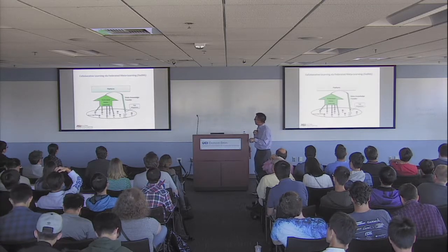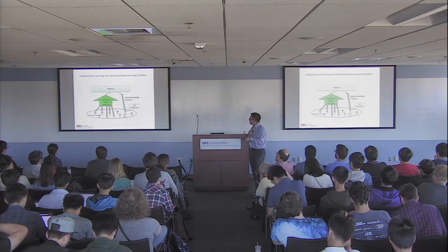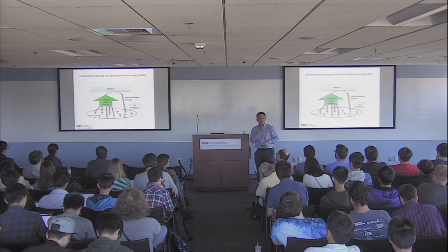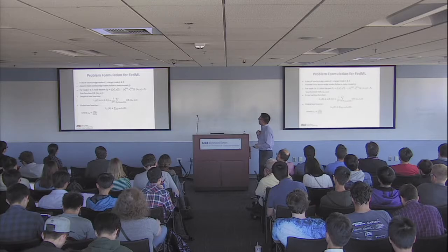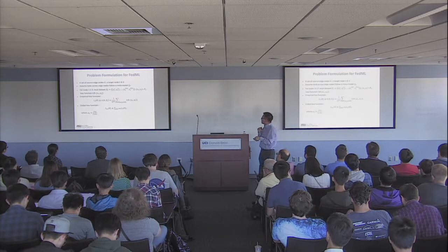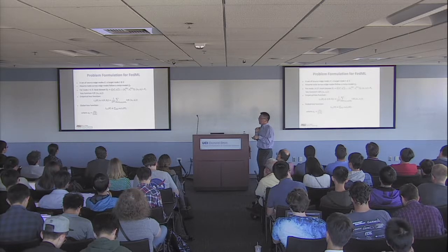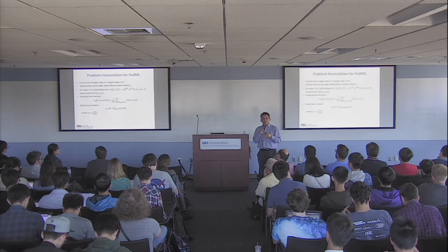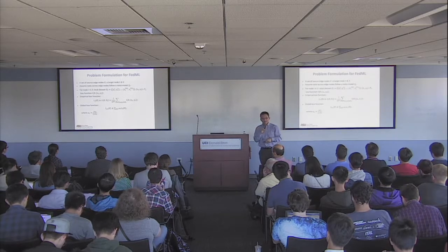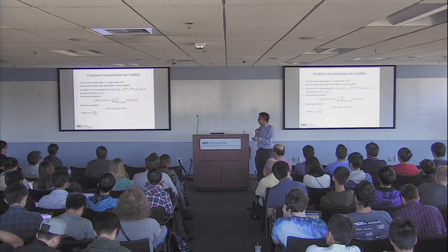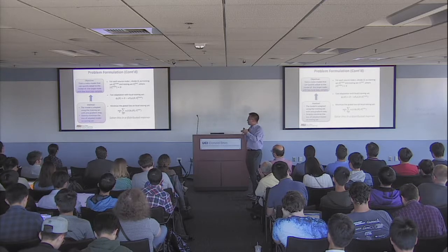To recap the setting: there are multiple source edge nodes we want to pre-train. We want to learn something about the model initialization and then transfer this to the target edge node, which can quickly adapt using a few local samples to learn a new task. Mathematically, each edge node has a local database and an empirical risk function. Because different nodes may have different databases with different distributions and sizes, we use a weighted version for the global loss function.